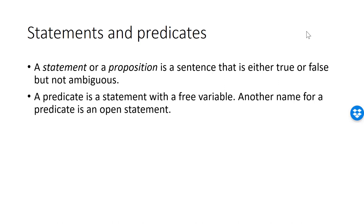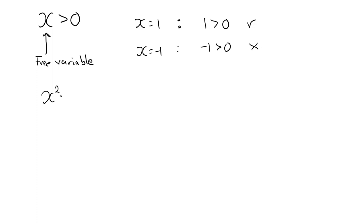Here is another example. x squared equal to 1 is a predicate with the free variable x. Replacing x with any specific number will turn the predicate into a statement that we can evaluate as true or false. Any specific number that makes the statement true is called a solution to the equation. We can always turn a predicate into a statement by replacing the free variable with a specific value.